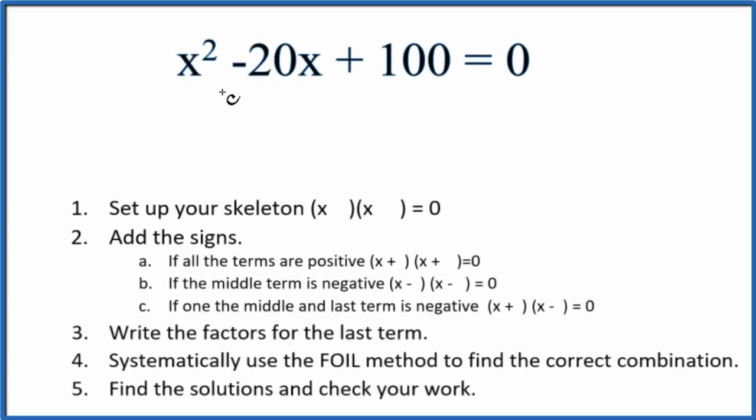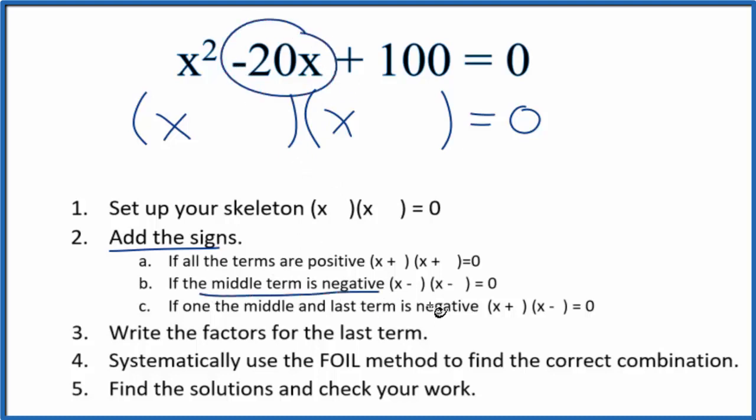In this video we'll factor and solve the equation x squared minus 20x plus 100 equals 0. The first thing we want to do is set up our skeleton equation. Once we have this, we can add the signs. If the middle term is negative, that means we'll put negatives right here.